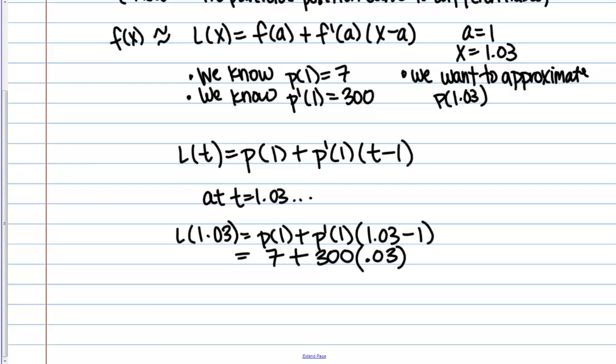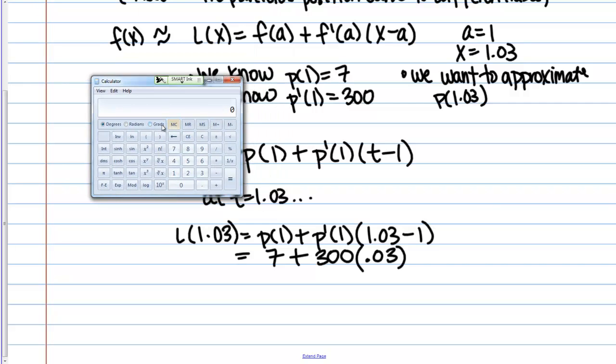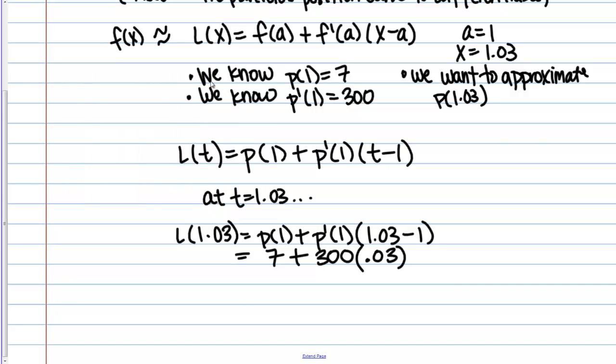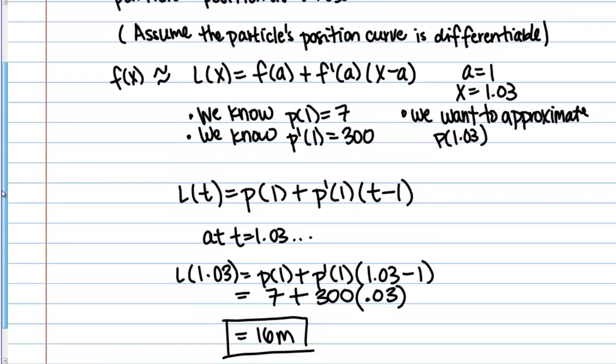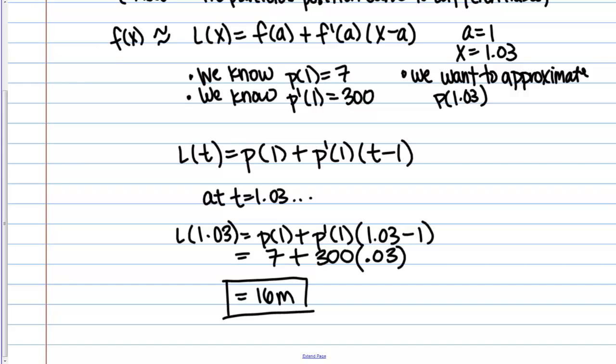So we can actually calculate this and get a value for it. So let's do that together. So we've got 300 times .03 and then we add 7 to that and we get 16. So it looks like our approximation is going to be that the particle is at 16 meters, were the units we used. Yes, 16 meters. So then 16 meters is our approximation of the particle's position at time equals 1.03 seconds.